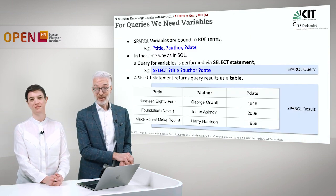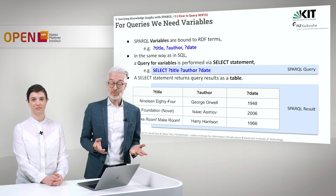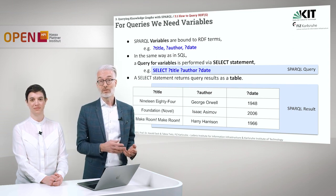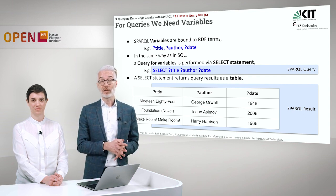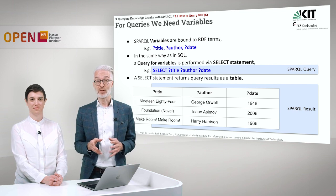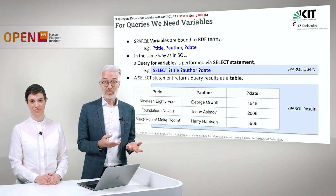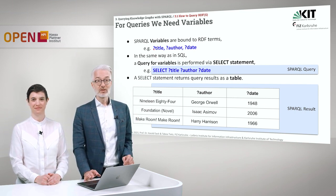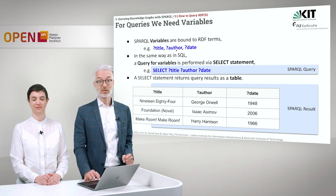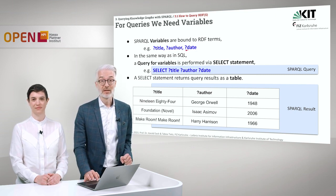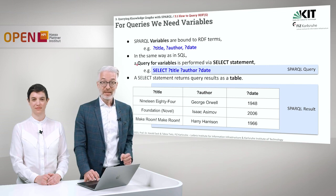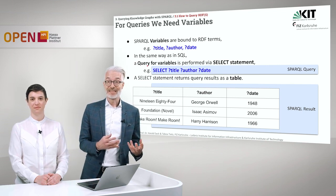To query this knowledge graph, we need variables — just like in SQL. Variables in SPARQL have to be bound to RDF terms, and to distinguish them from other things in your SPARQL query, variables are always introduced with a question mark. So ?title would be a variable for titles, ?author for author, and ?date for date. You query for these variables in a SELECT statement — just like in SQL — and then comes a list of variables.